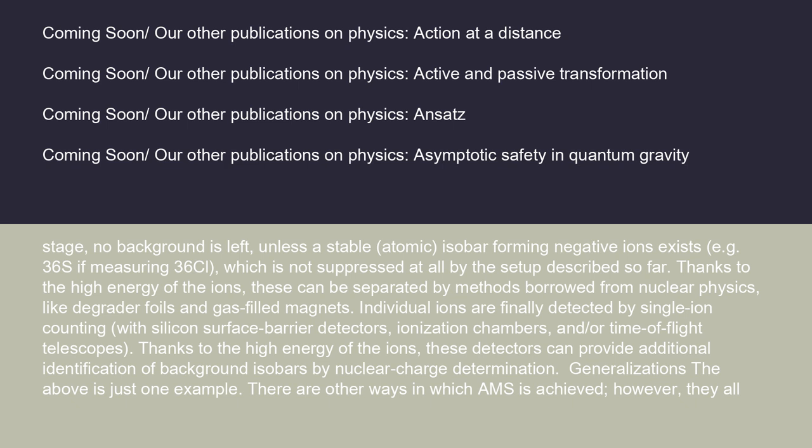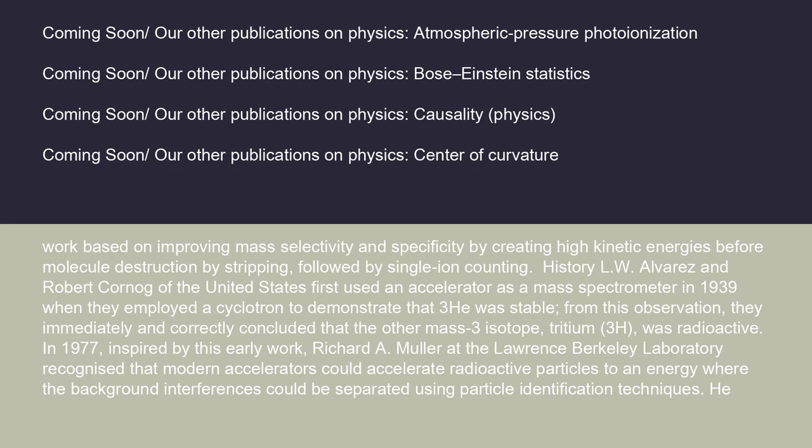Thanks to the high energy of the ions, these detectors can provide additional identification of background isobars by nuclear charge determination. The above is just one example — there are other ways in which AMS is achieved. However, they all work based on improving mass selectivity and specificity by creating high kinetic energies before molecule destruction by stripping, followed by single ion counting.